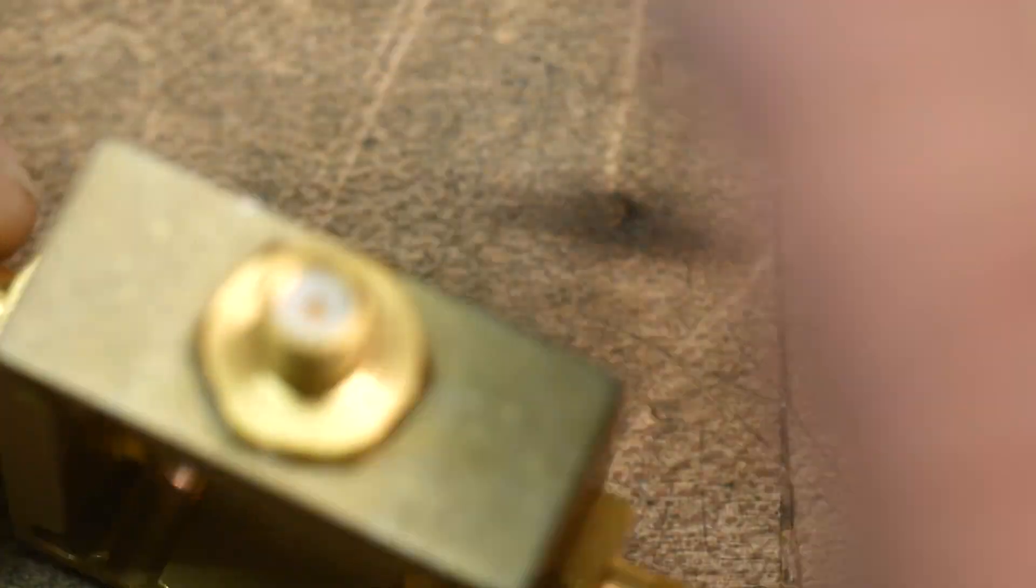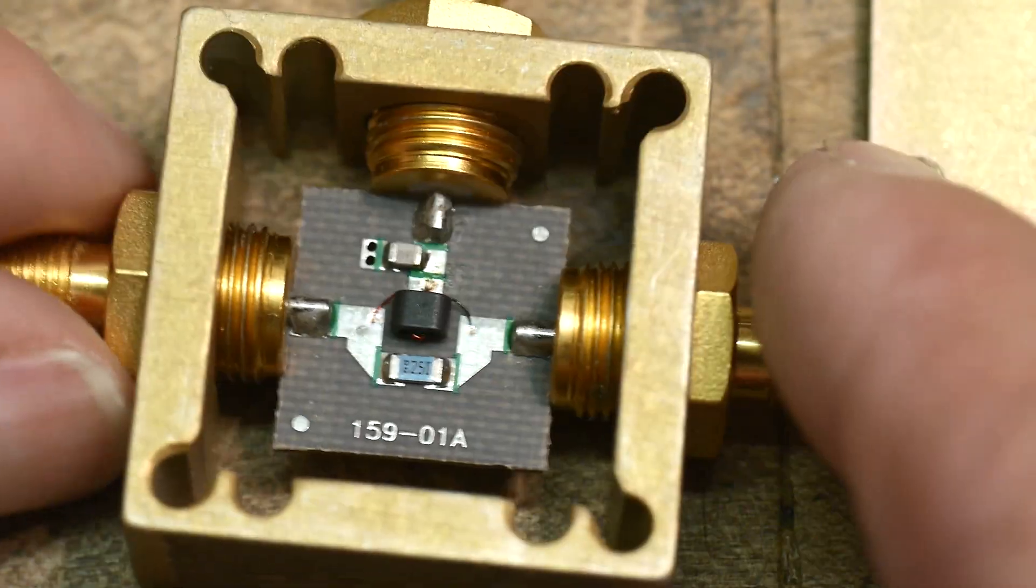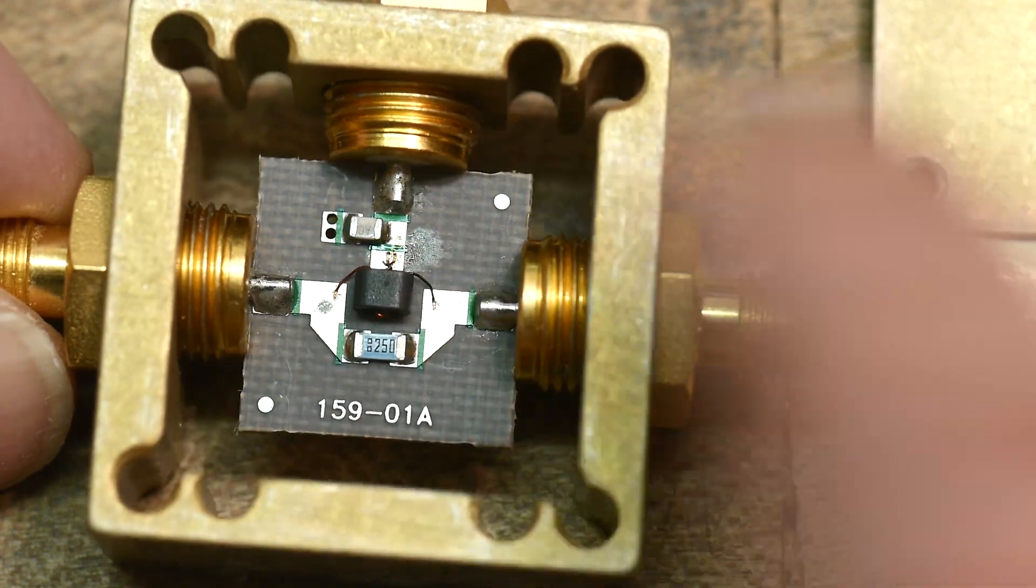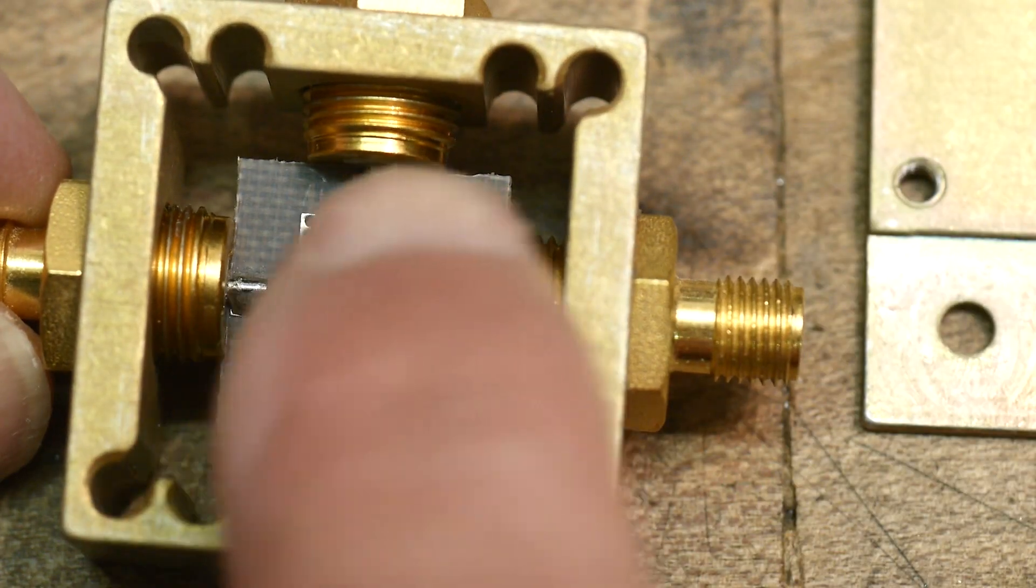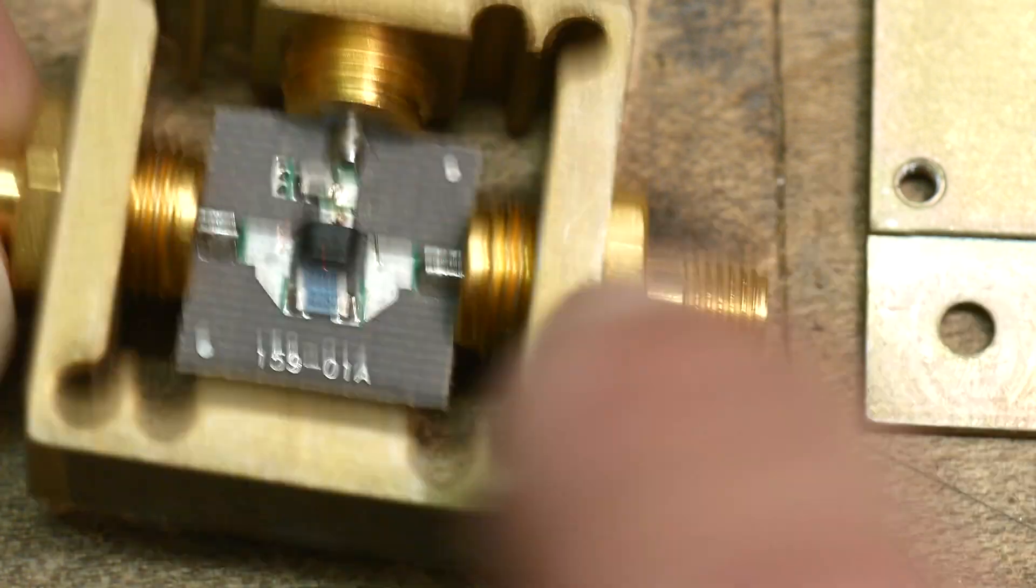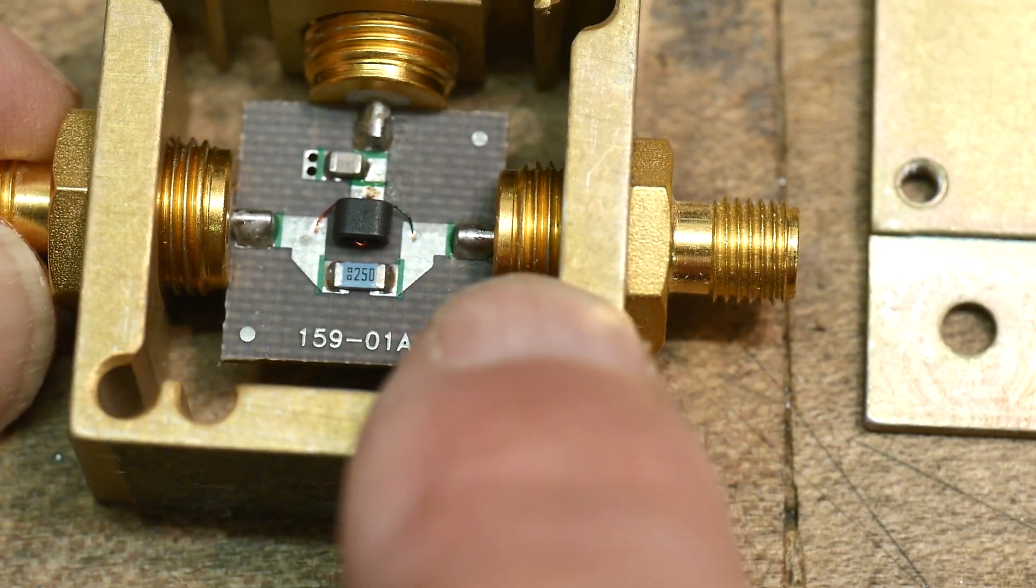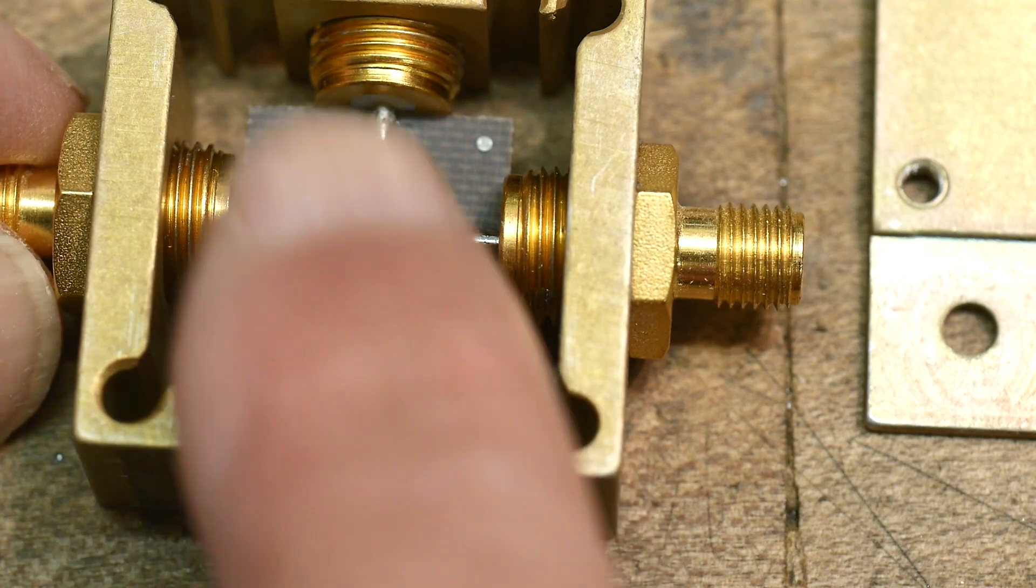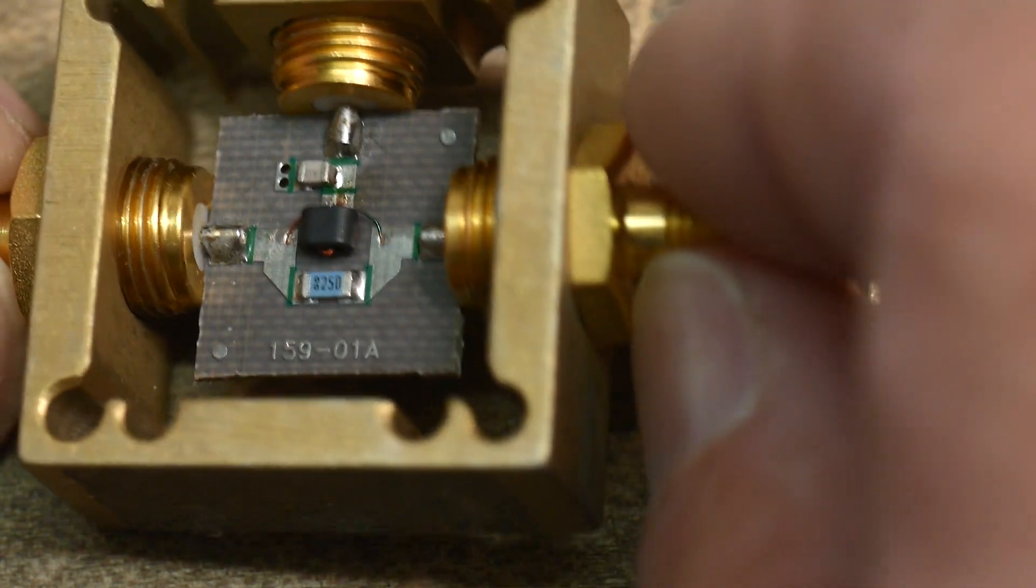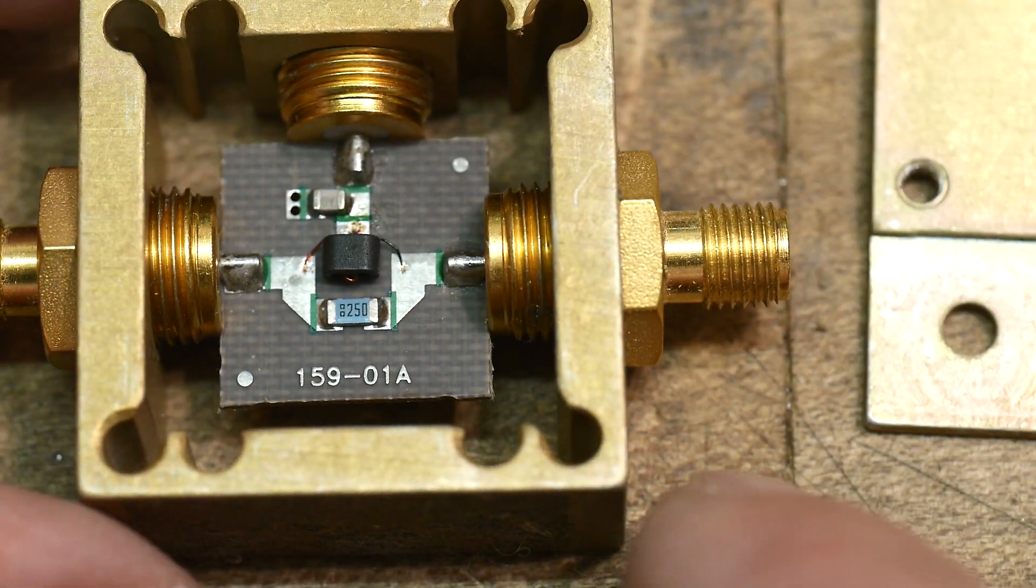So there's an input and then two outputs. The input looks like it has maybe a load resistor on it, so a 50 ohm load maybe. And then it goes into this transformer and gets split. So it's not going to be DC. It'll be some range of frequencies that this thing operates at.